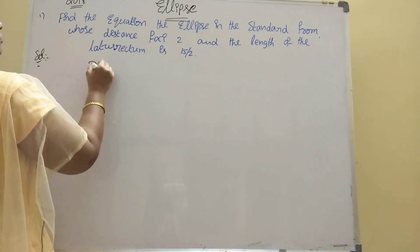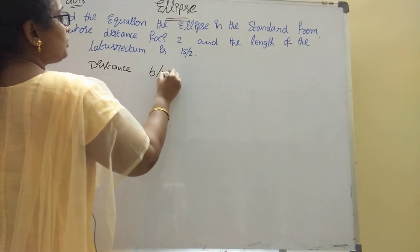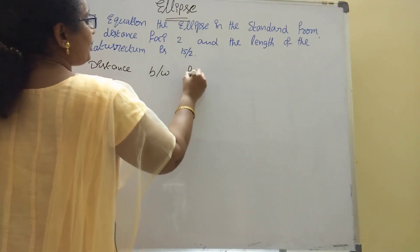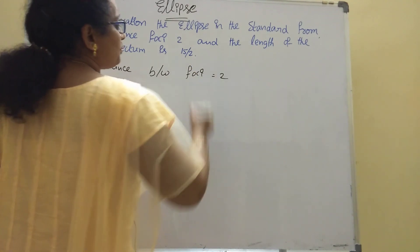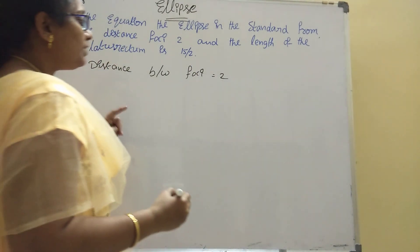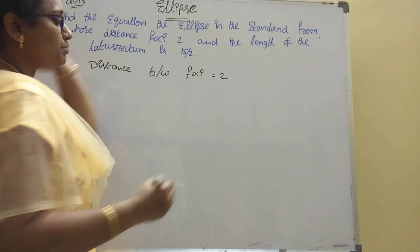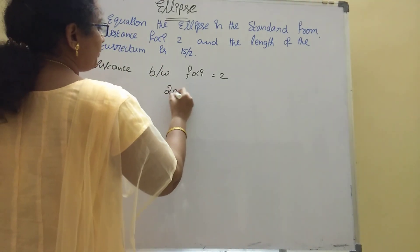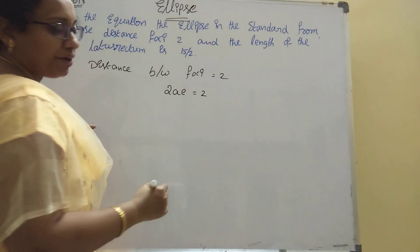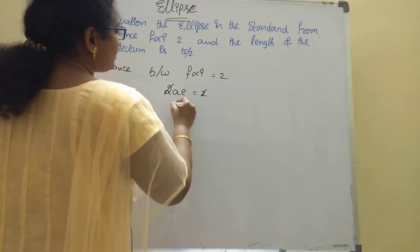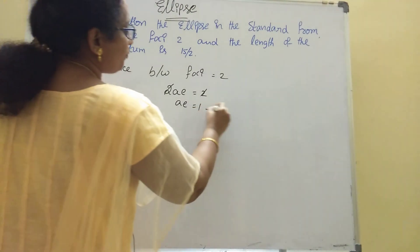First, the distance between foci. The formula for distance between foci in an ellipse is 2ae. So 2ae = 2, which gives us ae = 1.